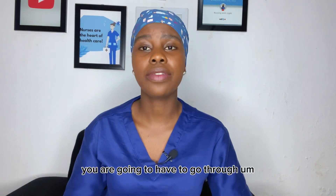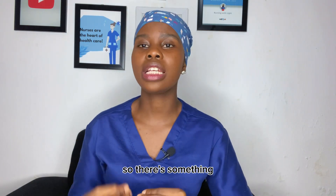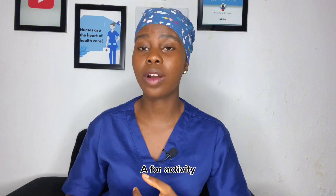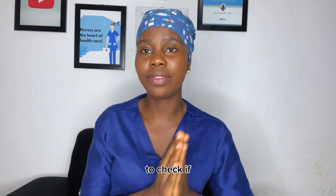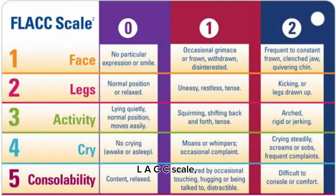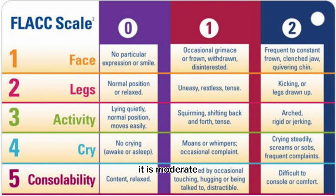When you want to assess pain in children, you have to use a different tool, because neonates and children may not be able to communicate their pain. There's something called the FLACC scale: F for facial expression, L for leg movements, A for activity, C for crying, and the last C for consolability. Each of the five elements is graded from 0 to 2, giving a total possible score of 10. A score of 1 to 3 indicates mild pain, 4 to 6 is moderate, and 7 to 10 is severe.